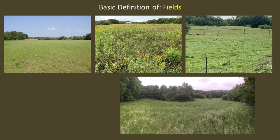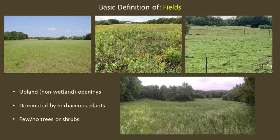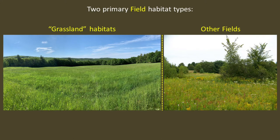I'll discuss field habitats first, and we'll begin with just a basic definition of the habitat conditions that function as field habitat for wildlife. Fields can be recognized as upland or non-wetland openings that are dominated by herbaceous, non-woody plants, and these habitats contain few or no trees or shrubs. As a wildlife biologist, I distinguish different fields based on how they function as wildlife habitat. Fields can be grouped into one of two primary types in New Hampshire: fields that function as grassland habitat, and all other fields.